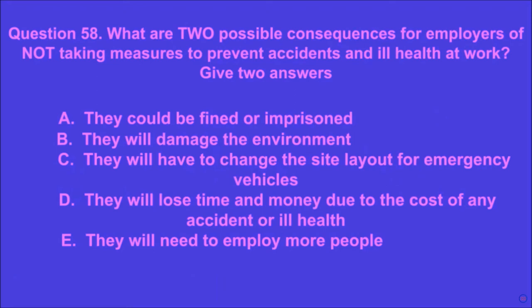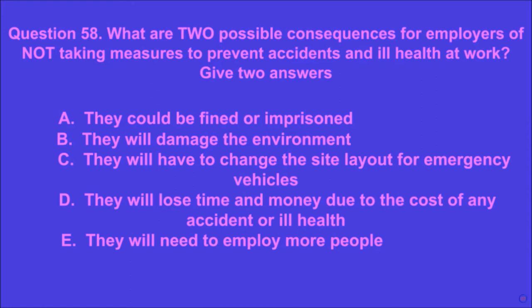Question 58: What are two possible consequences for employers of not taking measures to prevent accidents and ill health at work? Give two answers. A: they could be fined or imprisoned, B: they will damage the environment, C: they will have to change the site layout for emergency vehicles, D: they will lose time and money due to the cost of any accident or ill health, E: they will need to employ more people. A and D are the correct answers.